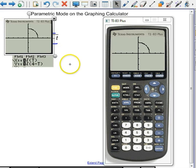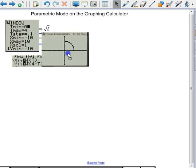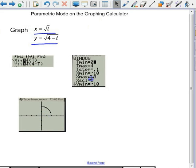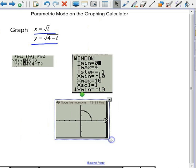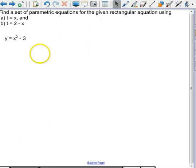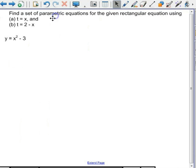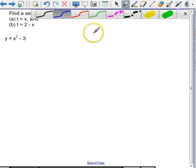So the last thing I want to show you all is how to go from rectangular to parametric. So this says, find a set of parametric equations for the given rectangular equation right here using a, t equals x, and b, t equals 2 minus x.